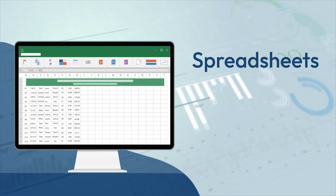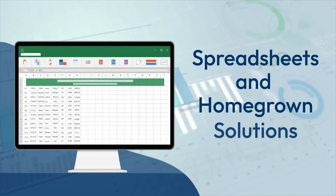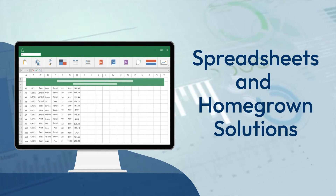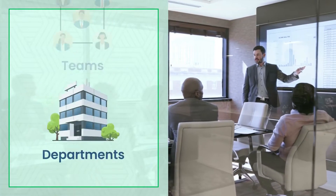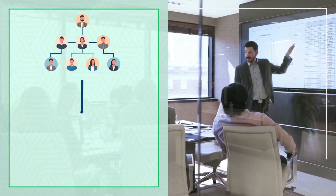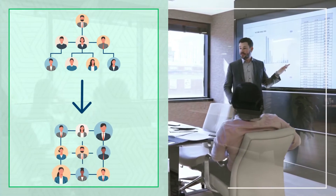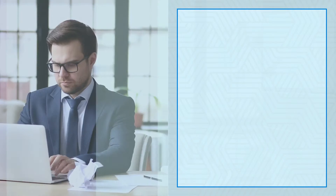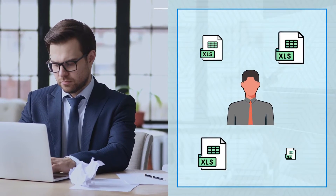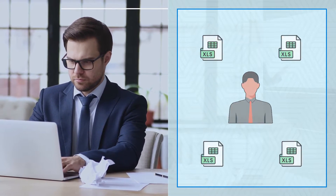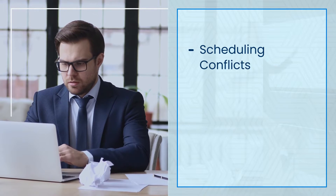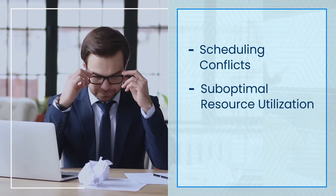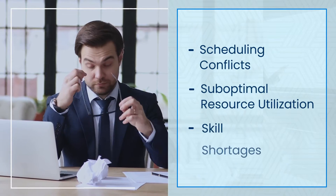Traditionally, basic tools such as spreadsheets and homegrown solutions were used for resource scheduling. Although they served the purpose at the team or department level, these tools became ineffective as organizations transitioned from hierarchical to matrix structures and started operating outside their home locations. These legacy solutions provide siloed information which causes scheduling conflicts, suboptimal resource utilization, skill shortages, etc.